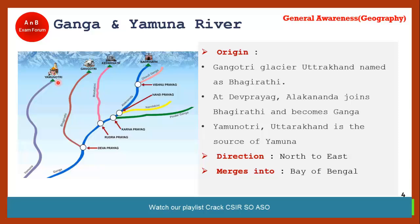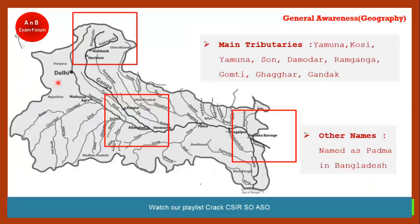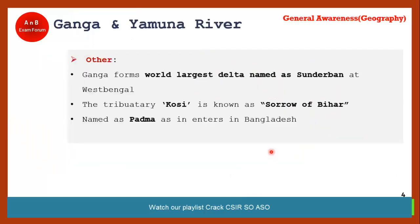Bhagirathi and Alaknanda meet at Dev Prayag near Rishikesh. From there, Ganga flows towards Kanpur, where it merges with the Yamuna river at Allahabad. It then flows through Patna and enters Bangladesh under the name Padma.